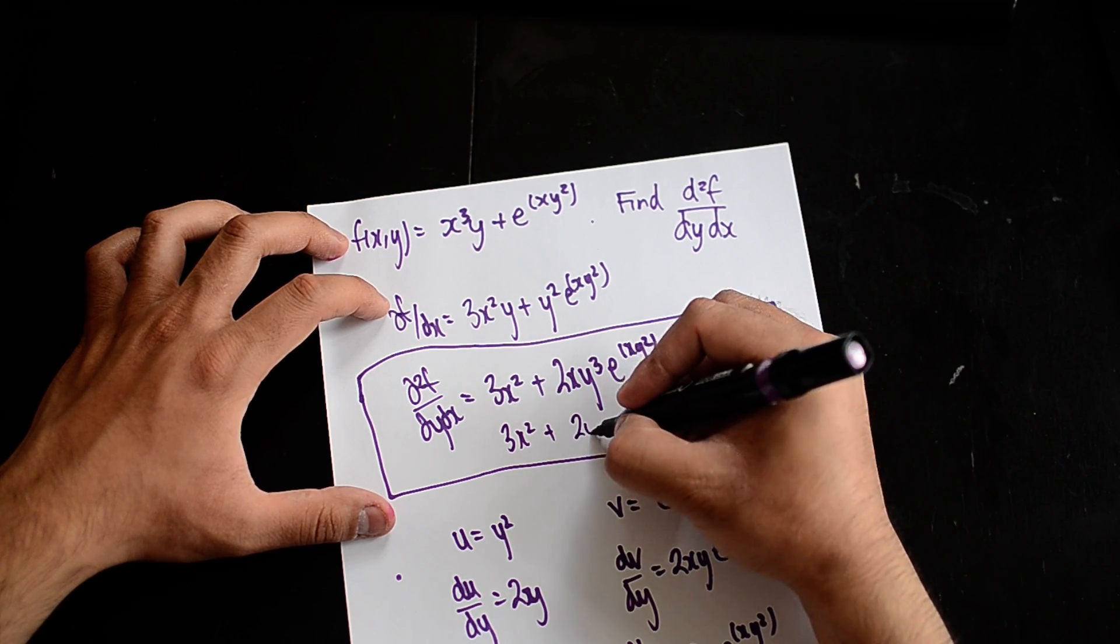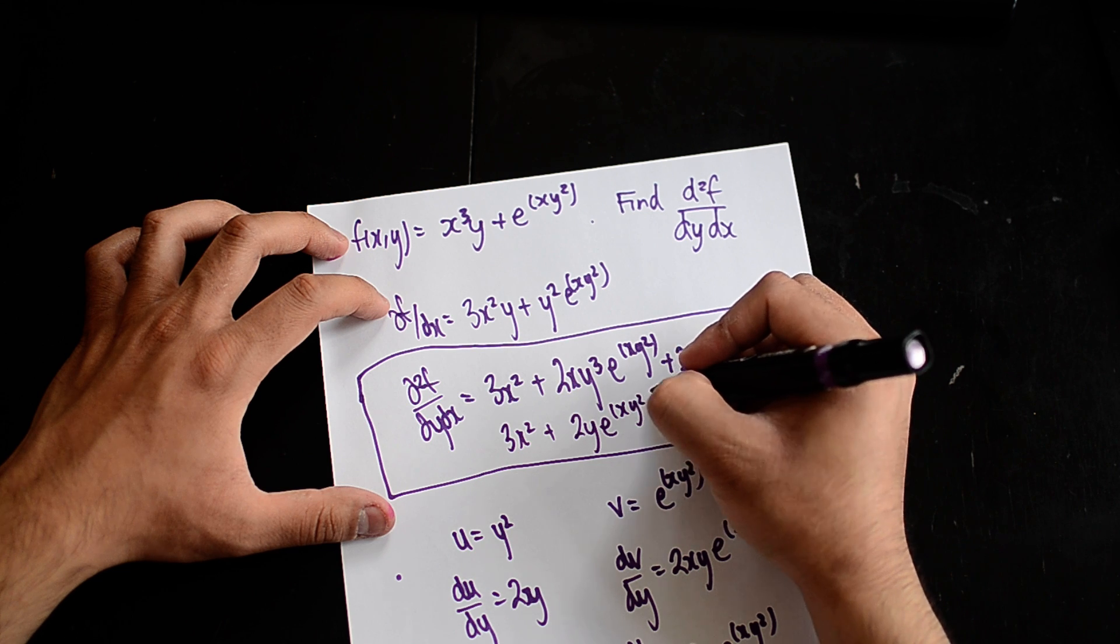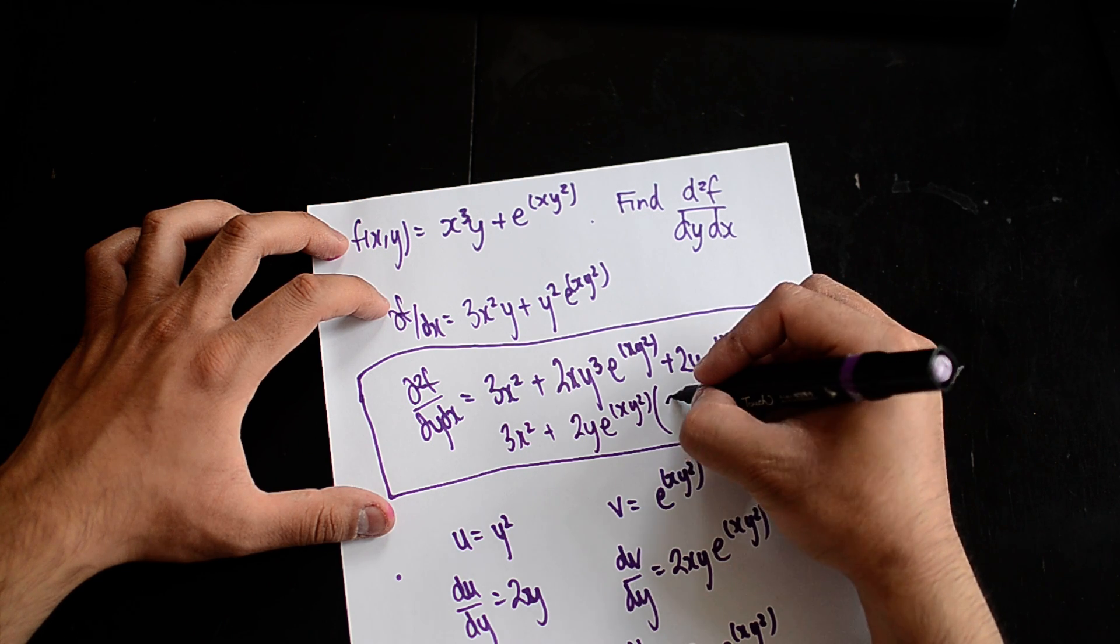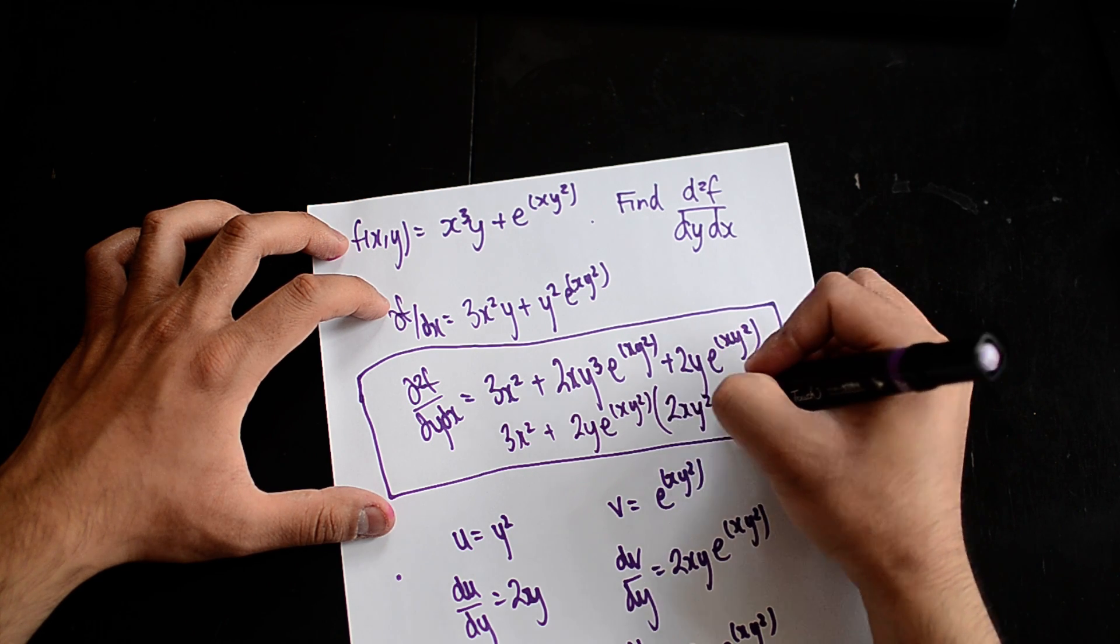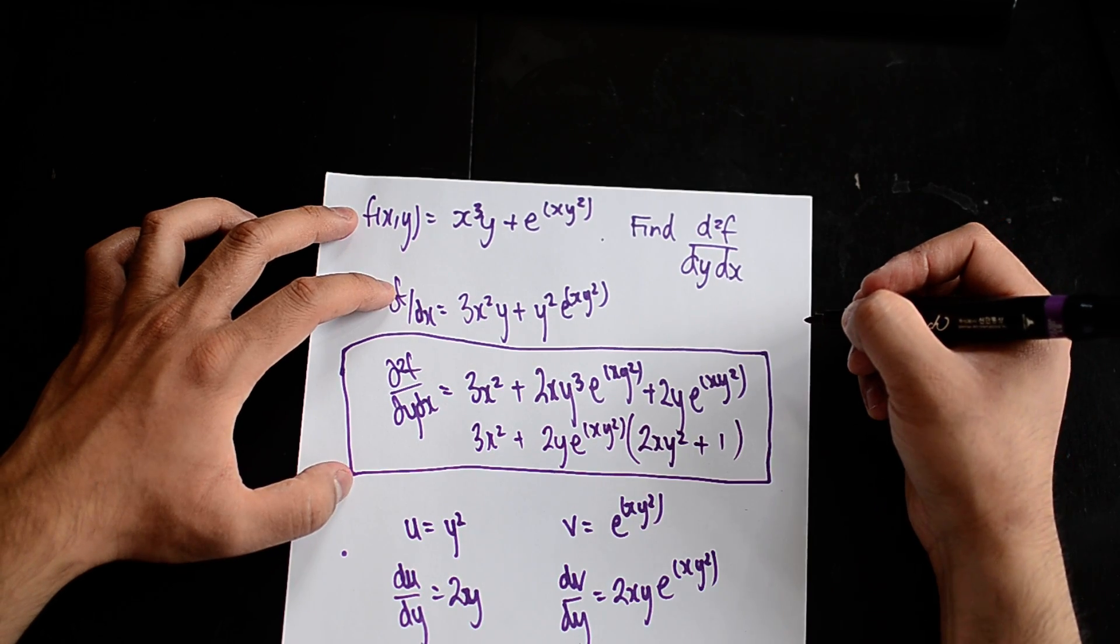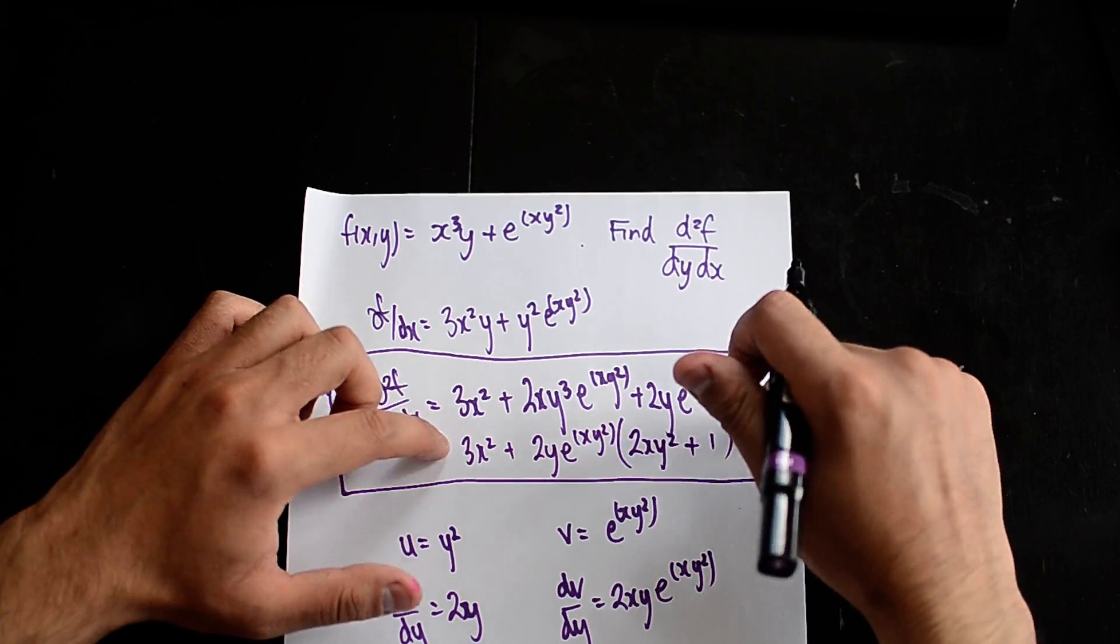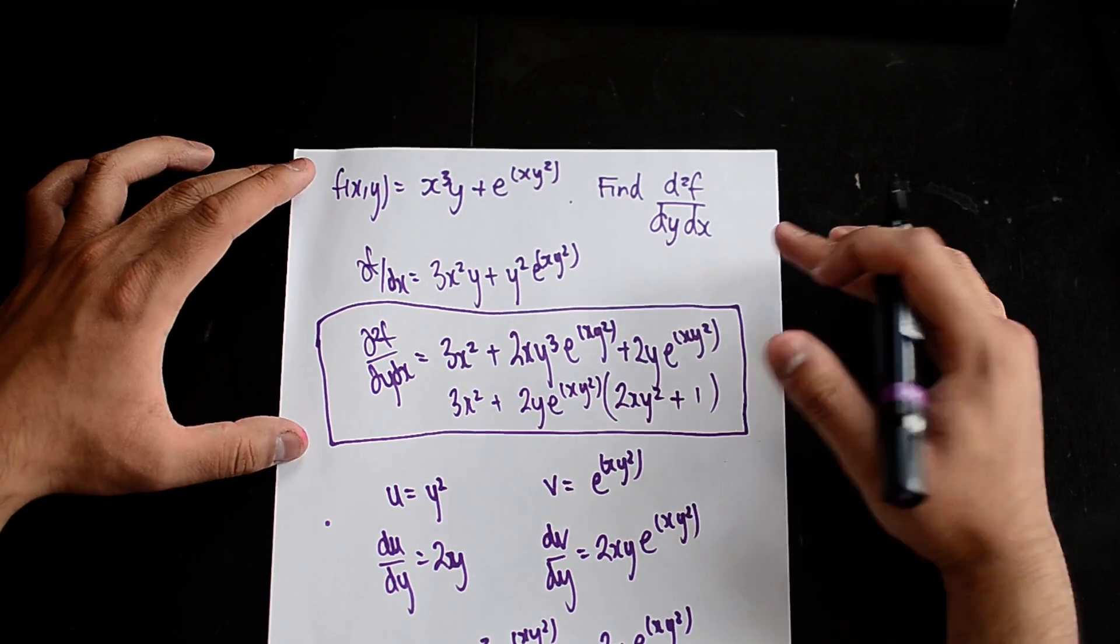So you can probably take out a 2y e^(xy²) and you can have 2xy² plus 1. So that is my answer.